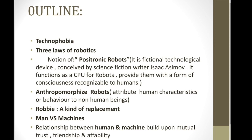The next one is Robbie as a kind of replacement. The robot here is replacing human beings - previously, human beings were used as caretakers, nurse mates, and for labor work. Then they were replaced by robots.